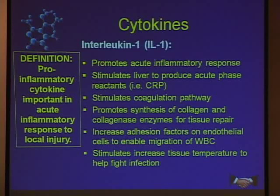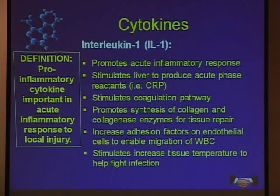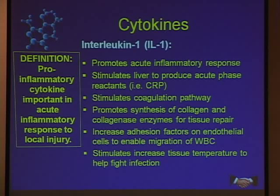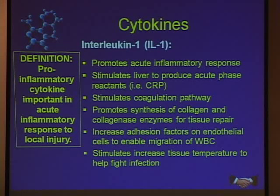Interleukin-1s promote the acute inflammatory response. They stimulate the liver to produce acute phase reactants such as CRP. They stimulate the coagulation pathway, promote synthesis of collagen and collagenase enzymes for tissue repair, and increase adhesion factors on endothelial cells to enable migration of white blood cells. They also stimulate increased tissue temperature to help fight infection.